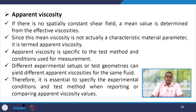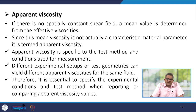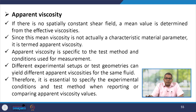Regarding apparent viscosity — if there is no spatially constant shear field, a mean value is determined from the effective viscosities. Since the mean viscosity is not actually a characteristic material parameter, it is termed apparent viscosity. Apparent viscosity is specific to the test method and conditions used for measurement, and different experimental setups or test geometries can yield different apparent viscosity values for the same fluid. Therefore, it is essential to specify the experimental conditions and test methods when reporting or comparing apparent viscosity values.